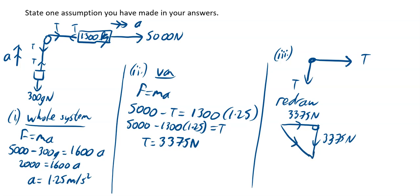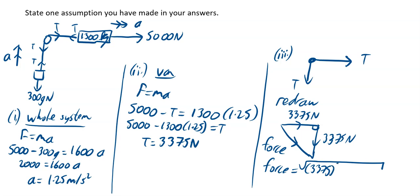What we want to do is just find the overall force — I'm going to call it R, the resultant force. Force is equal to the square root of 3375 squared plus 3375 squared. And if you do that out, what I have got is 4772.97 newtons to two decimal places.